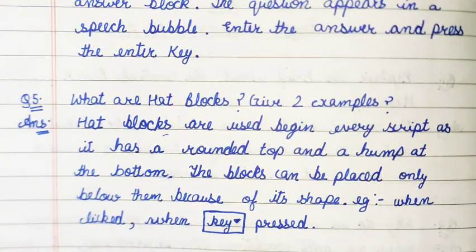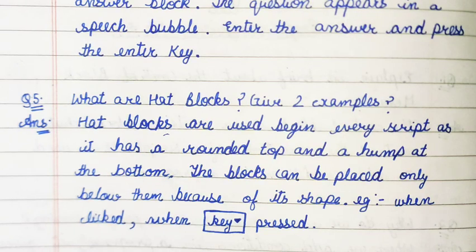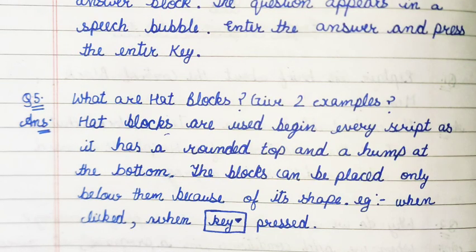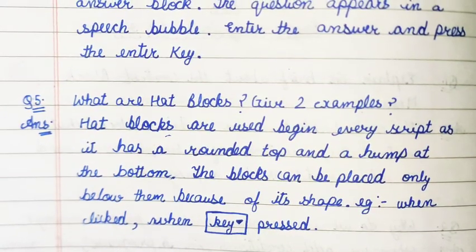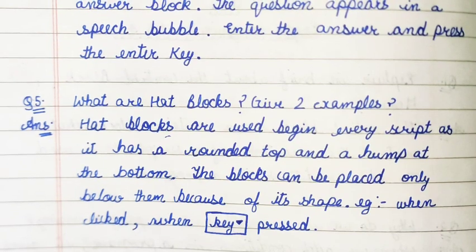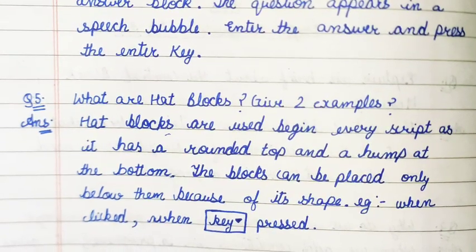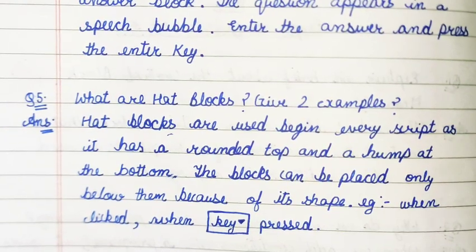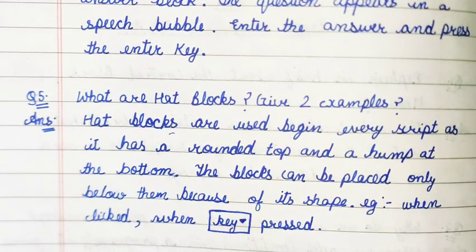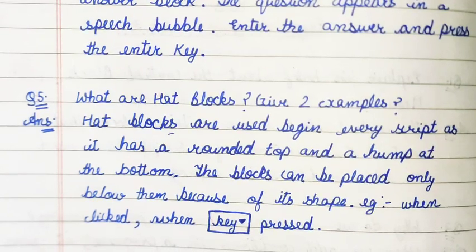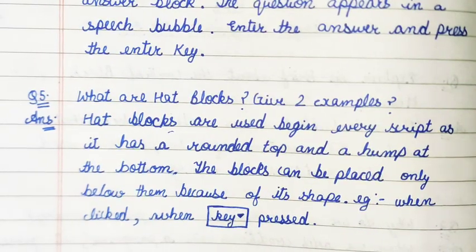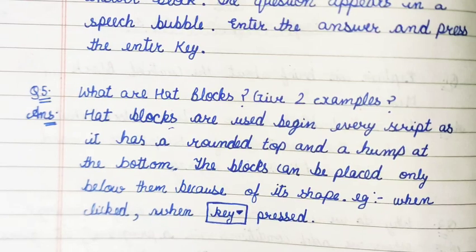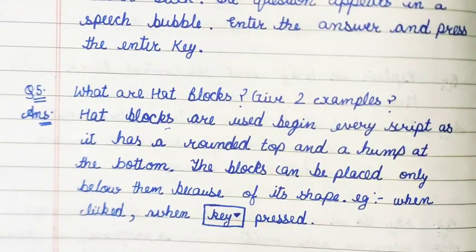Question number five: what are hat blocks? Give two examples. Answer: hat blocks are used to begin every script as they have a rounded top and a hump at the bottom. Other blocks can be placed only below them because of their shape. Examples: when clicked, or when key pressed — which offers options like right arrow key, space key, left arrow key, up arrow key, down arrow key, etc. Thank you, friends.